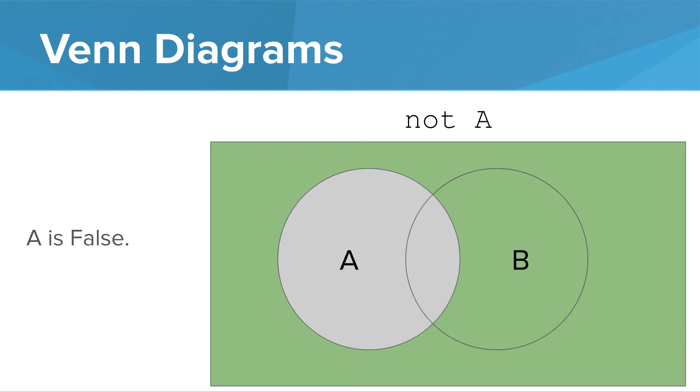This region represents A being false, which makes the expression not A evaluate to true. Anything can be green as long as it's not in A's circle.